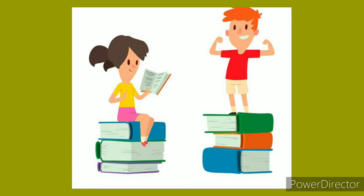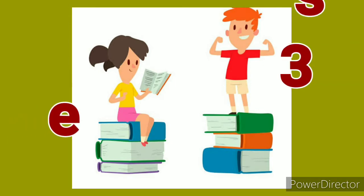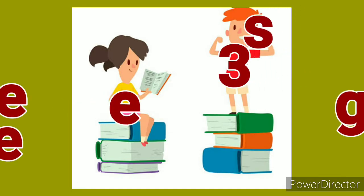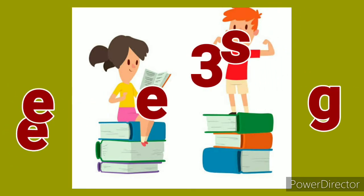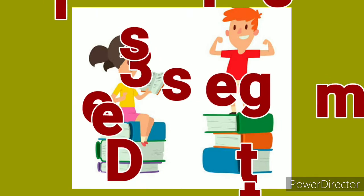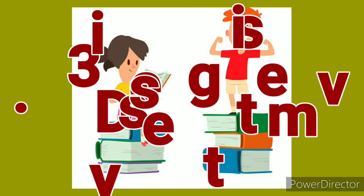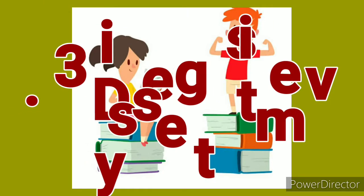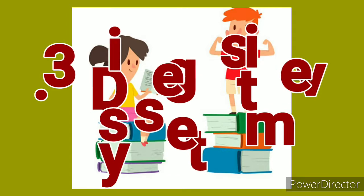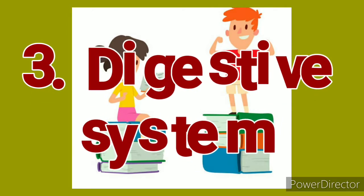The digestive system consists of the mouth, stomach, and intestine. We eat food through our mouth. The food reaches the stomach where it is chewed by teeth. There are 32 teeth in an adult human.